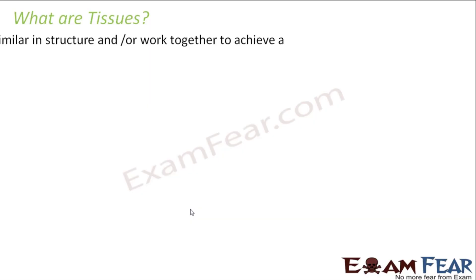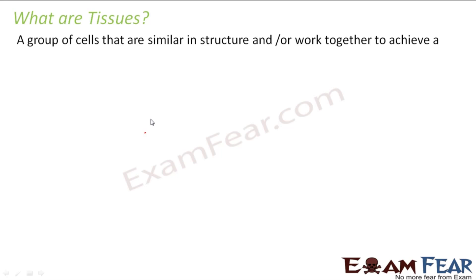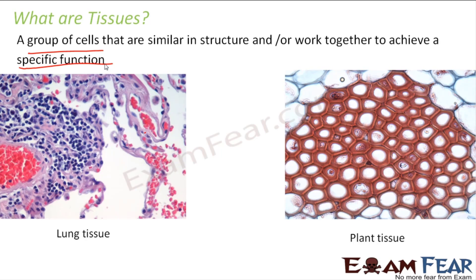A group of cells that are similar in structure and perform a similar function — they work together — and this type of group of cells is what we call a tissue. So a tissue is a group of cells that are similar in structure and/or work together to achieve a specific function. The group of cells may or may not be similar in structure, but they have to work together to perform a specific function. This group of cells is known as a tissue.